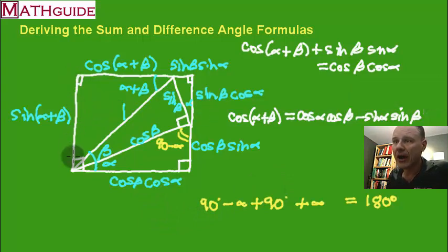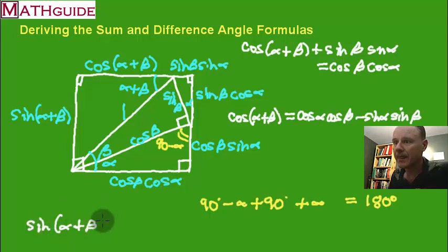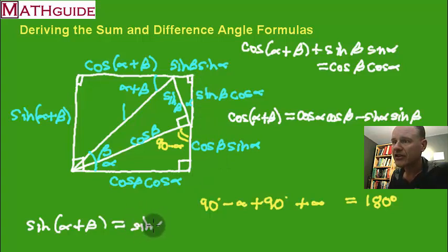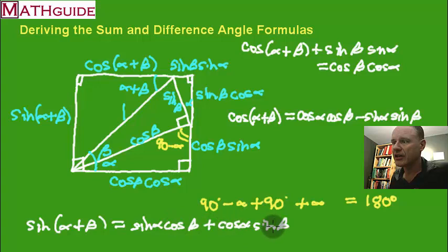Likewise, looking at the left side of the rectangle, opposite sides are congruent, so the sine of alpha plus beta equals the sum of the two left-side segments. That gives us sine alpha cosine beta plus cosine alpha sine beta. So sine of alpha plus beta equals sine cosine plus cosine sine — sine cosine cosine sine. There's the sine sum formula proven.